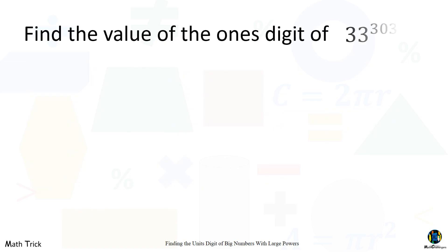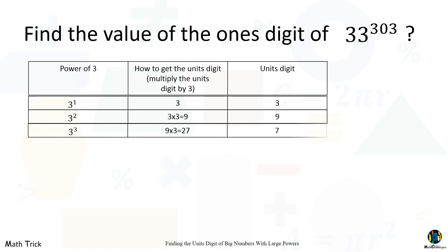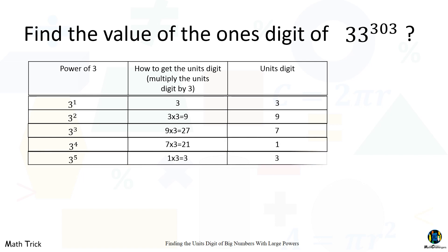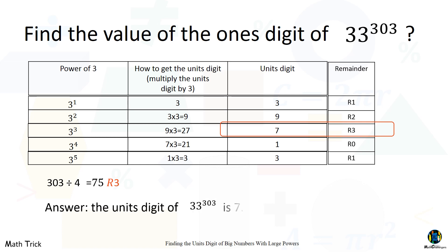Find the value of the one's digit of 33 raised to the 303rd power. Upon examining the unit's digit of the powers of three, we can see that the cyclicity of three is four. Three hundred three divided by four is seventy-five with a remainder of three. So the pattern repeats seventy-five times with three more rows remaining. The unit's digit of 33 raised to the 303rd power is seven.